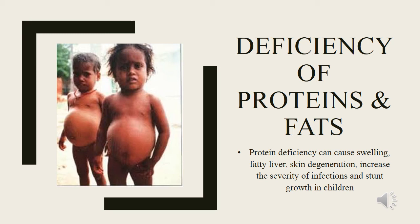Swelling is one of the most common signs that you are not getting enough protein, especially swelling in your abdomen, legs, feet and hands. Hair, nails and skin problems can also occur, as these are made up of proteins like elastin, collagen and keratin. When your body cannot make them, you could have thin hair, dry and flaky skin, and deep ridges on your fingernails.